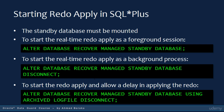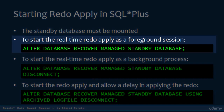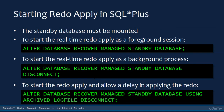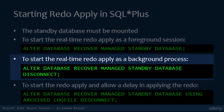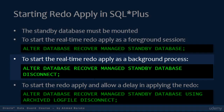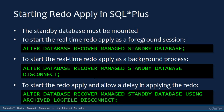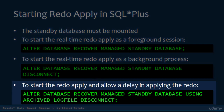In SQL Plus, to start the real-time Redo Apply services as a foreground session, you issue the statement: ALTER DATABASE RECOVER MANAGED STANDBY DATABASE. To start them in the background, you use: ALTER DATABASE RECOVER MANAGED STANDBY DATABASE DISCONNECT. To start the Redo Apply process and allow a delay in applying the Redo, you issue: ALTER DATABASE RECOVER MANAGED STANDBY DATABASE USING ARCHIVED LOG DISCONNECT.